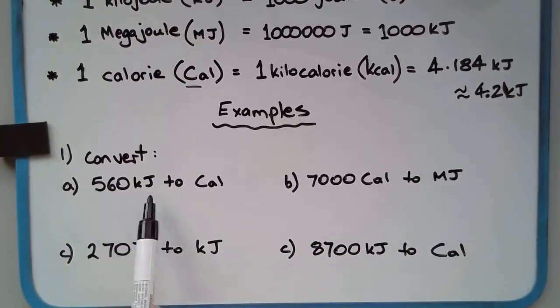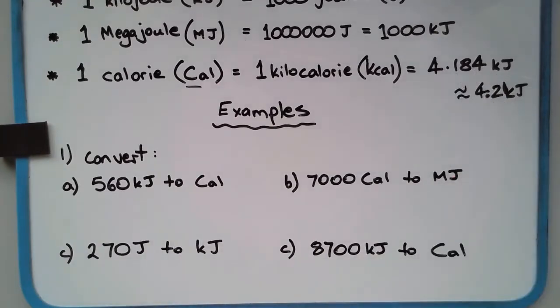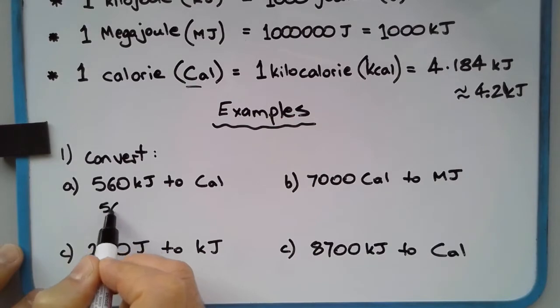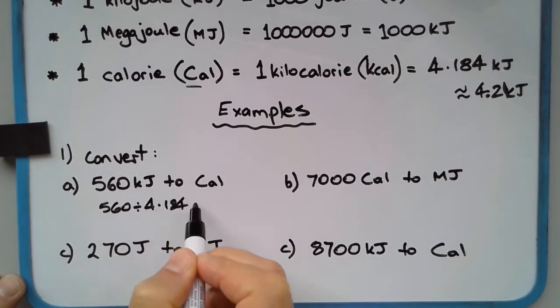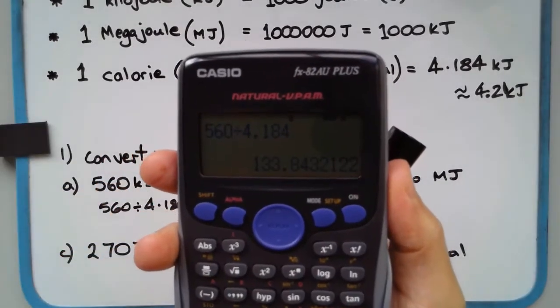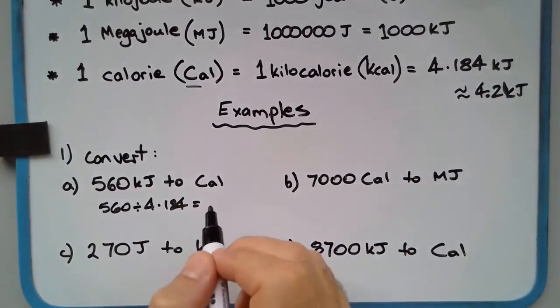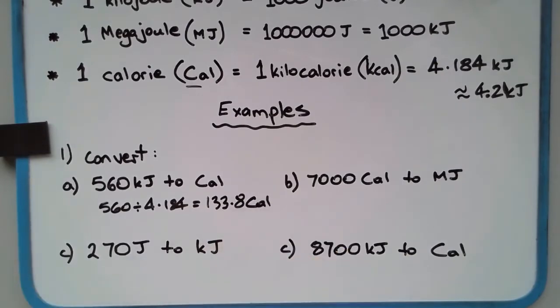Converting 560 kilojoules to calories. Remember that the calorie is the larger unit of measure, so it's going to be a division. 560 divided by 4.184 equals 133.8 calories (capital C, small a, small l).